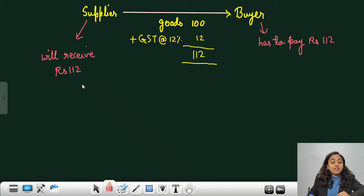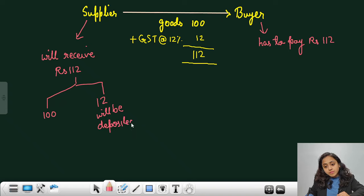Now the seller will not keep entire Rs 112 with himself. Instead Rs 100 will be kept with them and Rs 12 will be deposited to government, to GST department. It will be submitted, it will be deposited to the government.